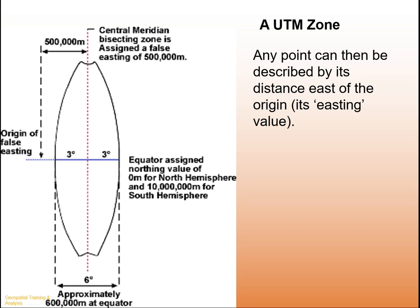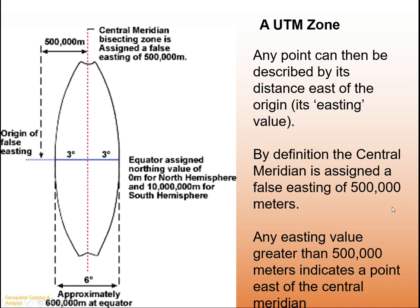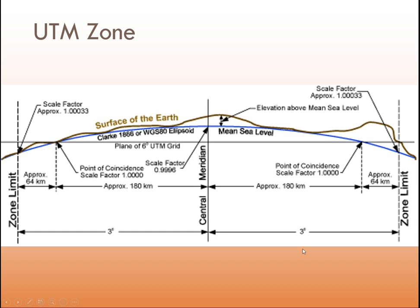Any point can be described by its distance east of the origin, known as its easting. By definition, the central meridian is assigned a false easting of 500,000 meters — anything along that line has that value. An easting greater than 500,000 meters indicates a point east of the central meridian; values decrease as you go west. You can also visualize this by imagining cutting down into the earth's surface and viewing the zone in three dimensions, with three degrees on either side of the central meridian.